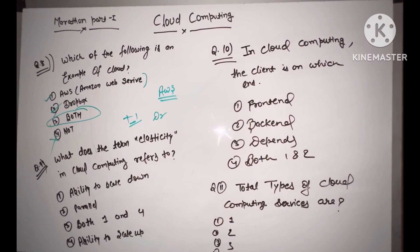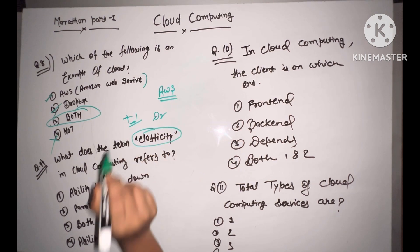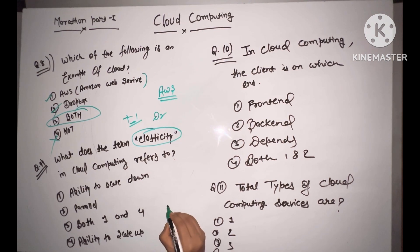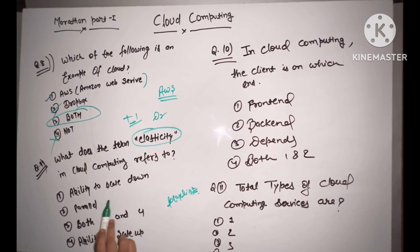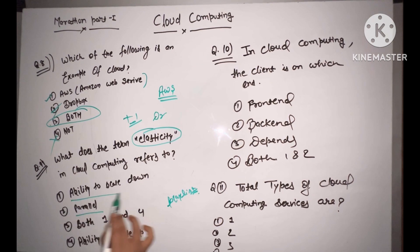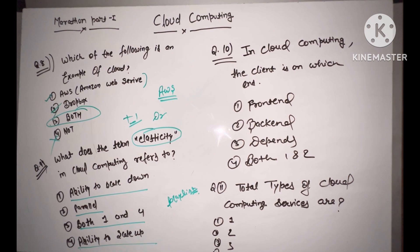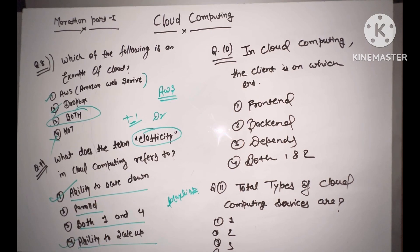Next question: what does the term 'elasticity' in cloud computing refer to? Options include the ability to scale down, parallel processing, both, or the ability to scale up. Elasticity refers to both the ability to scale down and the ability to scale up. The answer is one and four — both. Plus one.